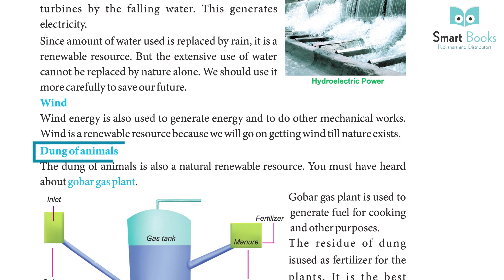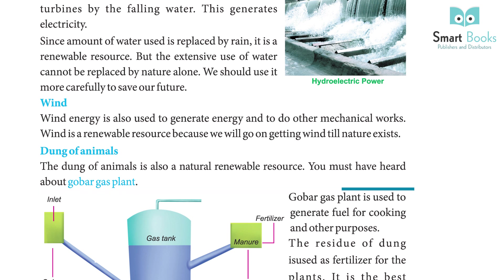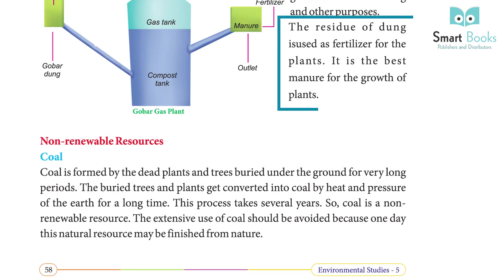The dung of animals is also a natural renewable resource. Gobar gas plant is used to generate fuel for cooking and other purposes. The residue of dung is used as fertilizer for plants. It is the best manure for the growth of plants.